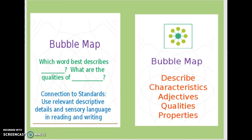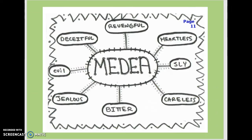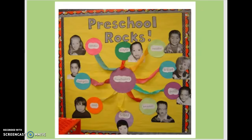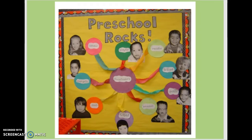Bubble maps are for describing — their goal is to describe. You can give the characteristics of something using adjectives that show qualities and properties. The first example uses adjectives that describe Medea from a reading. The next one is a bulletin board with pre-K students — it has a picture and the word that each pre-K kid used to describe himself. One kid's brilliant, one's polite, and one's persistent — maybe the teacher helped with some of those.